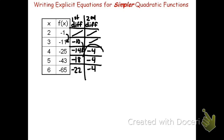We'll look at the second differences. The coefficient of the x squared, that is the number in front of the x squared, is always half of the second difference. In this case, half of negative 4 is negative 2.